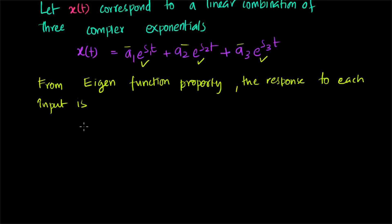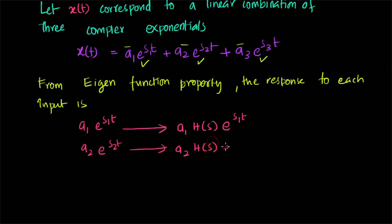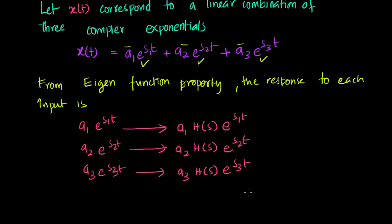From the eigenfunction property, which we have already derived in the previous video, the response to each input — that is, if you are giving the complex exponents separately into the LTI system — the complex exponent a1·e^(s1·t) will give a1·H(s1)·e^(s1·t), and a2·e^(s2·t) will give a2·H(s2)·e^(s2·t).